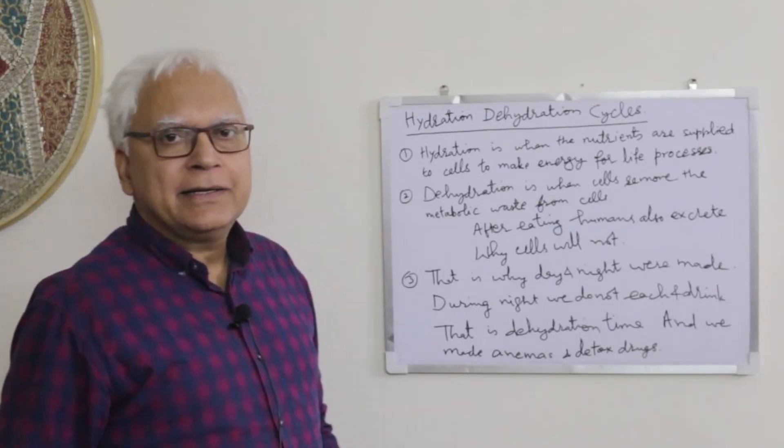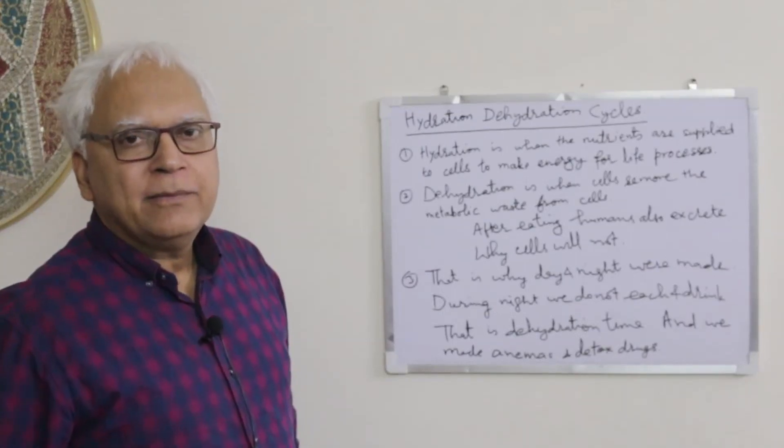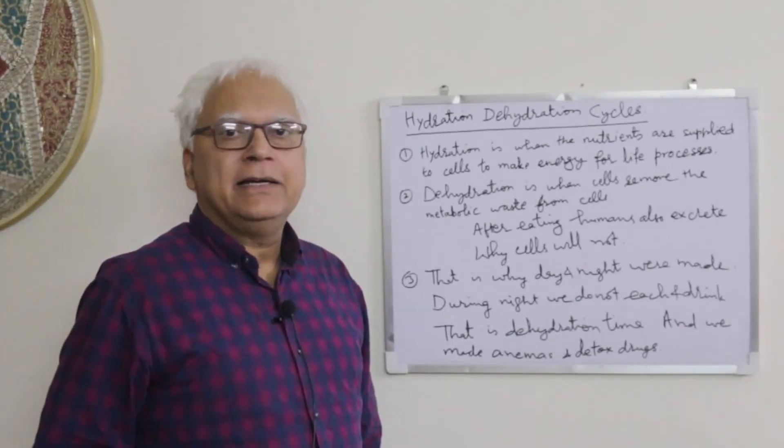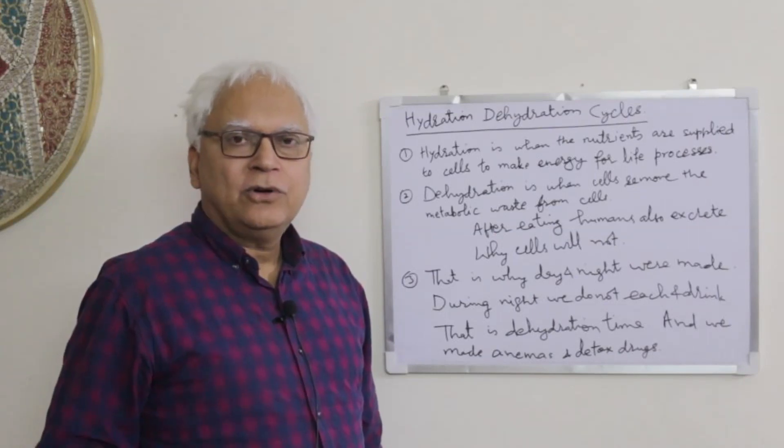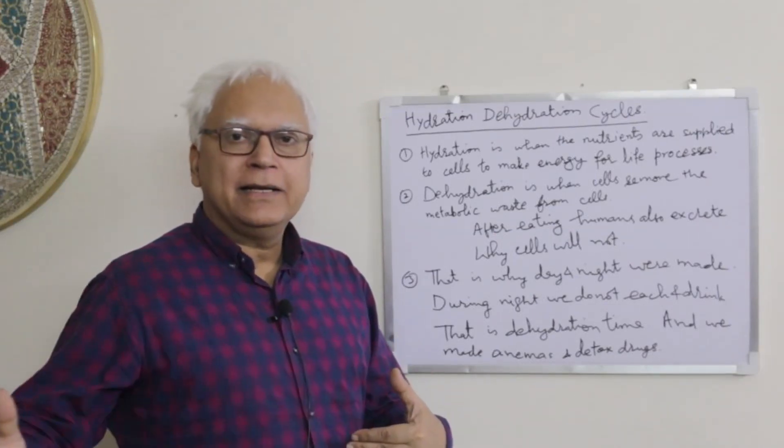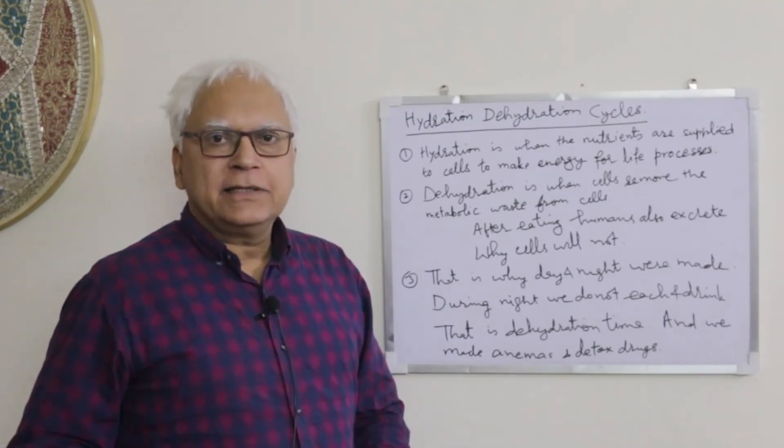People who will keep on eating and drinking will not be able to dehydrate in the proportion in which they eat and drink. So the problem takes place - there's a mismatch or imbalance between what we eat and what we excrete.